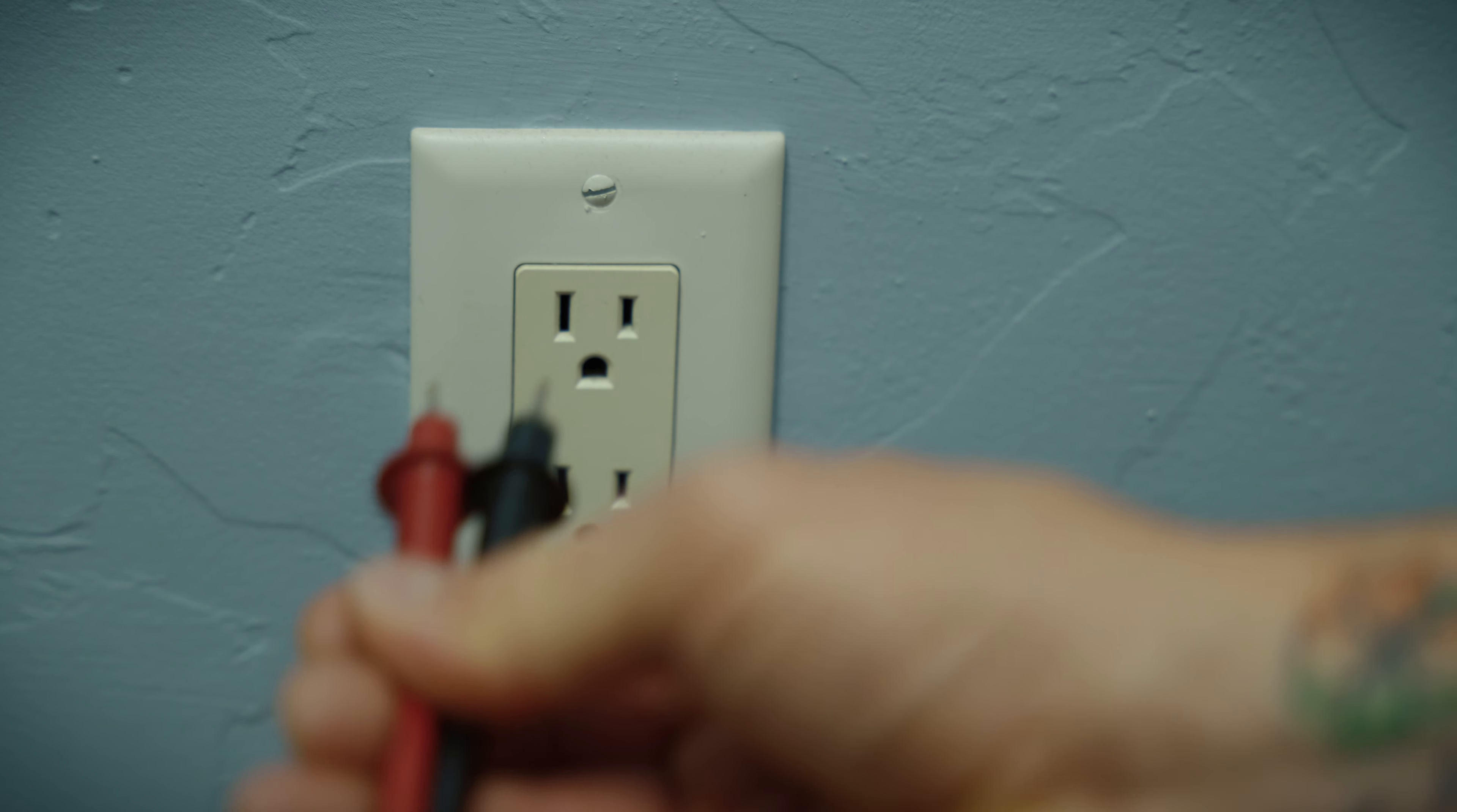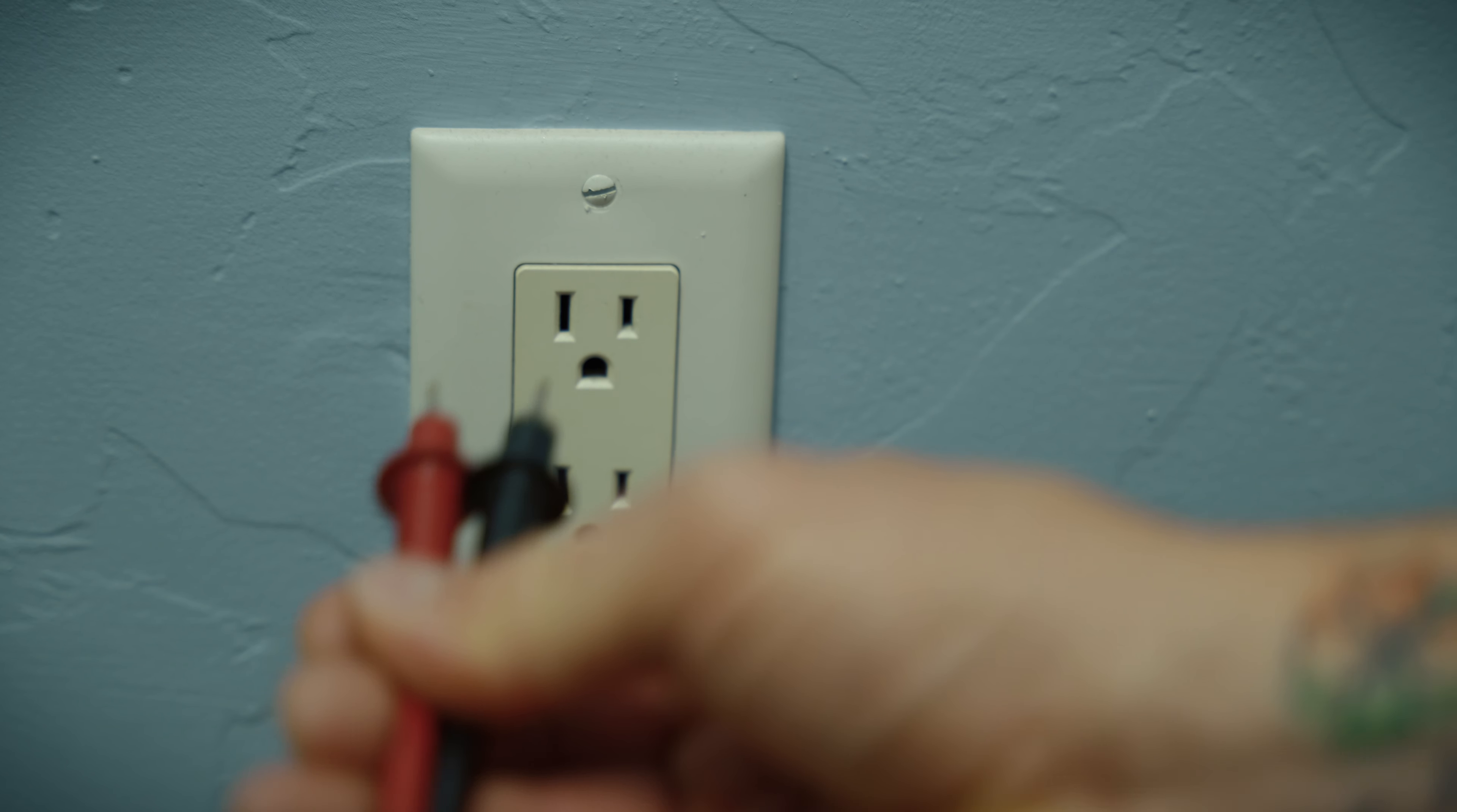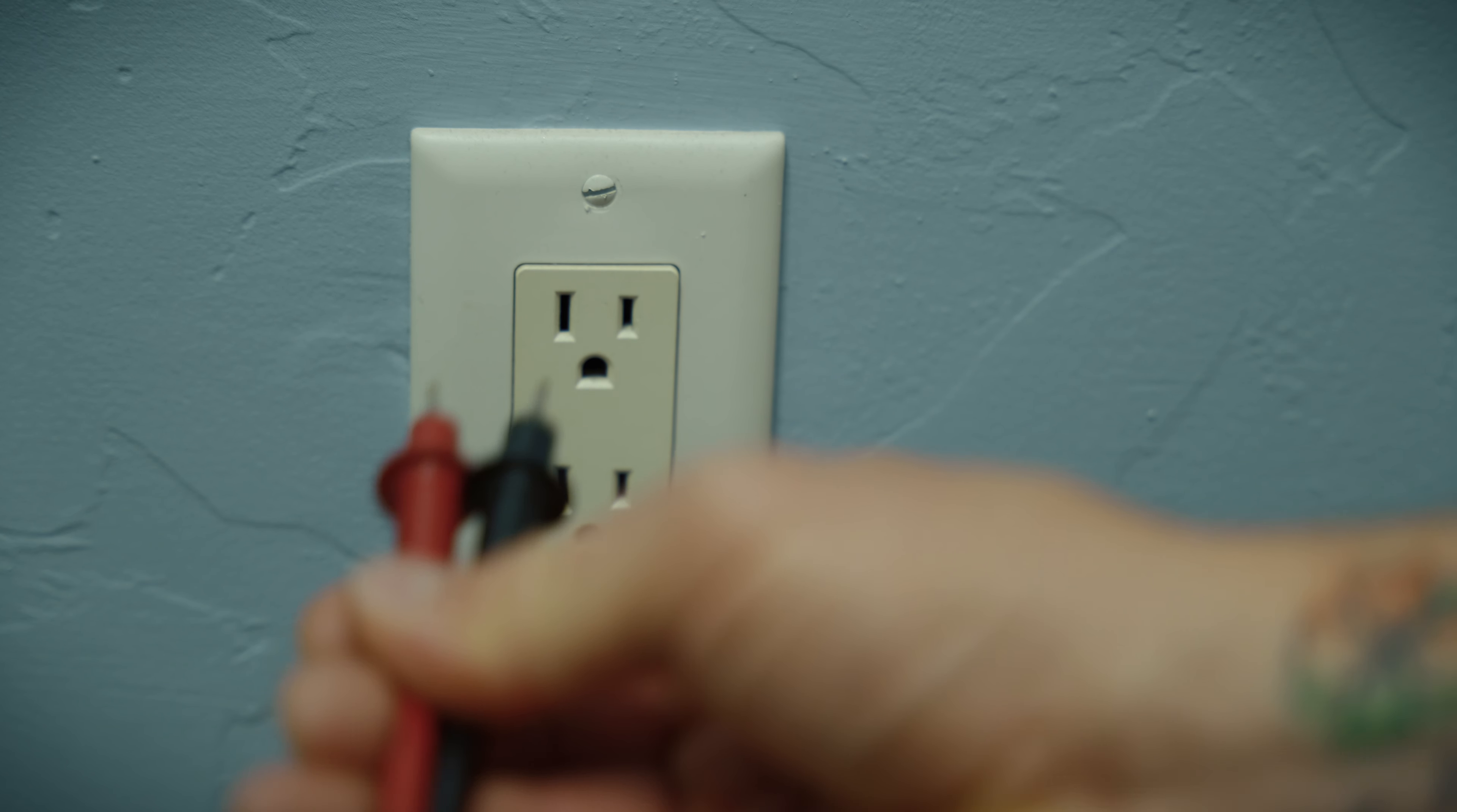So for the frequency or hertz check, again, using one hand, we will insert the red and black probe straight into the wall socket. And here in the U.S., we get 60 hertz, so that's pretty close, 60.01, definitely with intolerance. Some countries use 50 hertz, so you may get that reading instead.